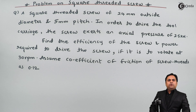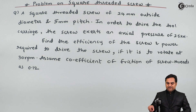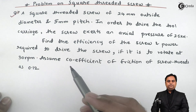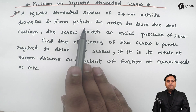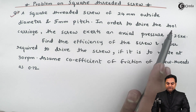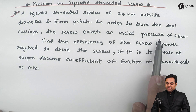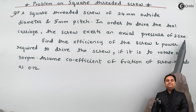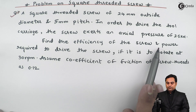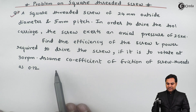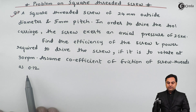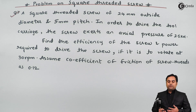Hello friends, in this video we will see a problem on square threaded screw. The question is: a square threaded screw of 24 mm outside diameter and 5 mm pitch is used to drive the tool carriage. The screw exerts an axial pressure of 2.5 kilo Newton. Find the efficiency of the screw and the power required to drive the screw if it rotates at 30 rpm. Assume coefficient of friction of screw threads as 0.12.